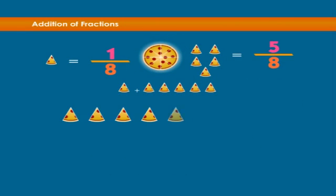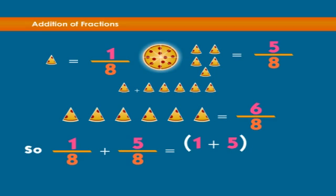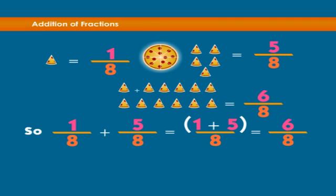We get six-eighths. So, we see that one-eighth plus five-eighths is equal to one plus five over eight, which equals six over eight. If we reduce six over eight, we get three over four.